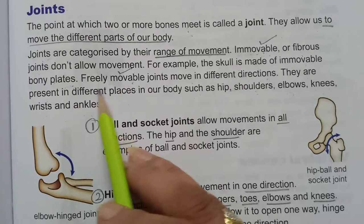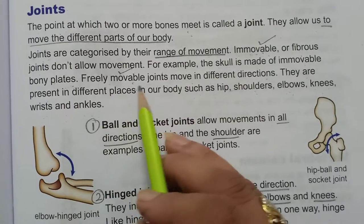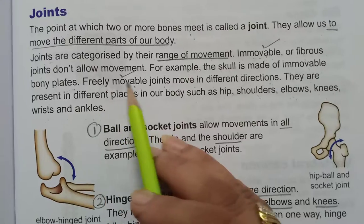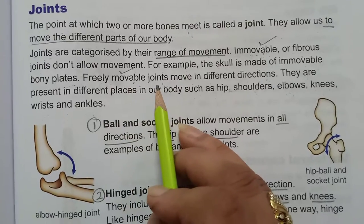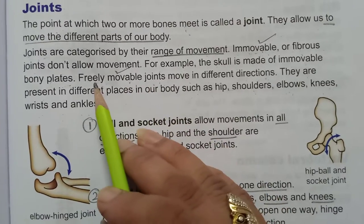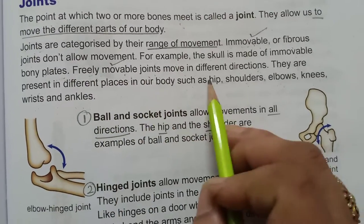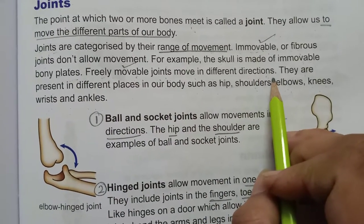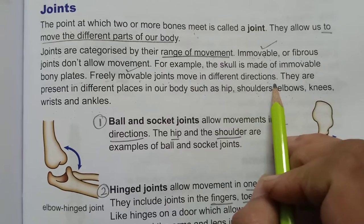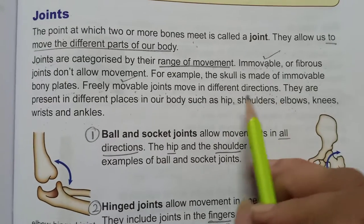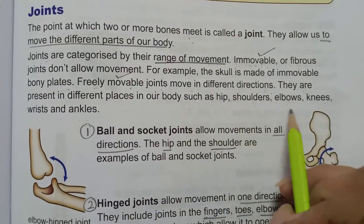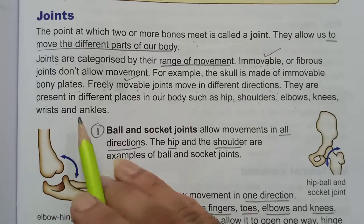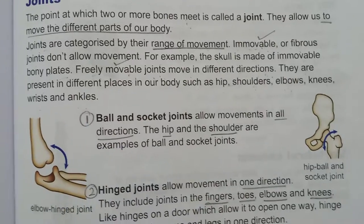The second type are freely movable joints. As the name suggests, these joints are free to move in different directions. They are present in different parts of our body like the hip, shoulders, elbows, knees, wrists, and ankles.